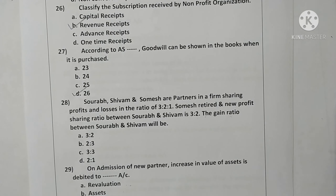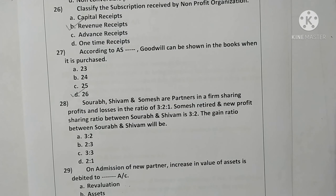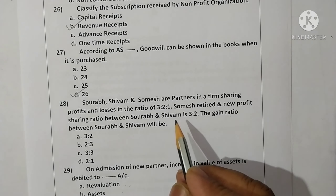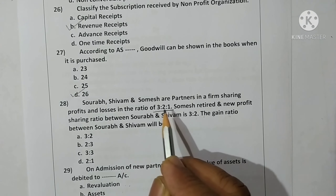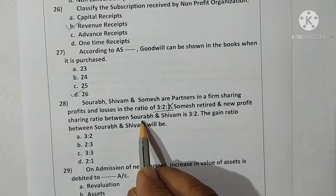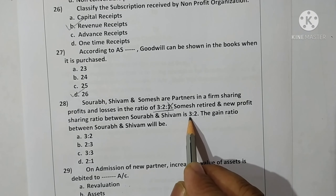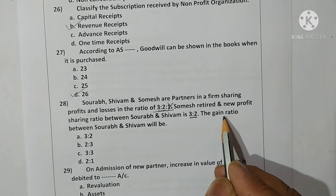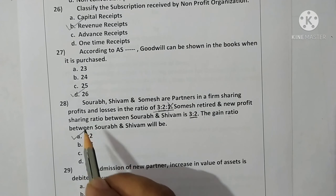Question twenty-eight: Saurav, Shivam and Somesh are partners sharing profits and losses in ratio 3:2:1. Somesh retired and the new profit sharing ratio between Saurav and Shivam is 3:2 — the same as the old ratio. Therefore the gaining ratio will also be the same. Option A is correct.